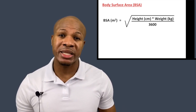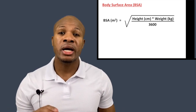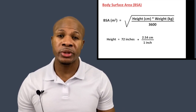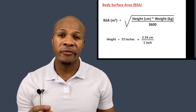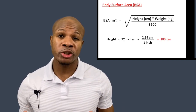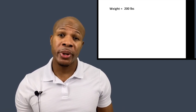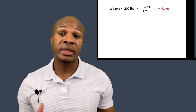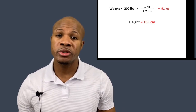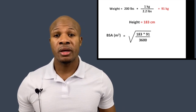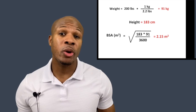For the patient's height, we need to convert from inches to centimeters. There are 2.54 centimeters in an inch, so we multiply 72 inches times 2.54 to get 183 centimeters. For the patient's weight, there are 2.2 pounds in 1 kilogram, so we divide 200 pounds by 2.2 to get 91 kilograms. So the body surface area equals the square root of 183 times 91 divided by 3,600, and when we plug that into the calculator, we get 2.15 meters squared.